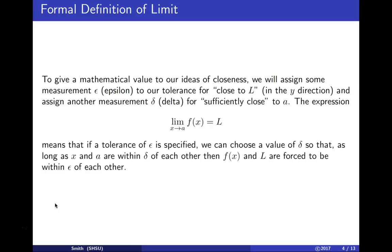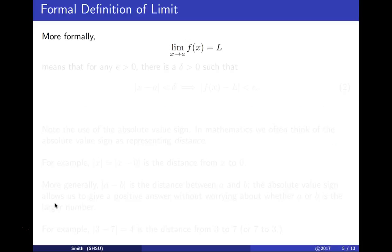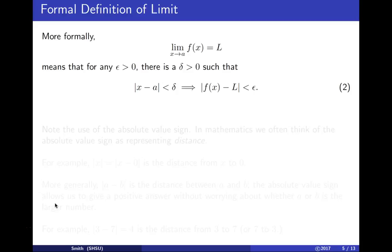Delta will be a difference or distance along the x-axis; epsilon will be a distance or difference along the y-axis. In mathematical symbols, this limit means that for any epsilon greater than zero there's a delta greater than zero so that as long as the difference between x and a is less than delta — x and a are within delta of each other — then f of x and L are within epsilon of each other.